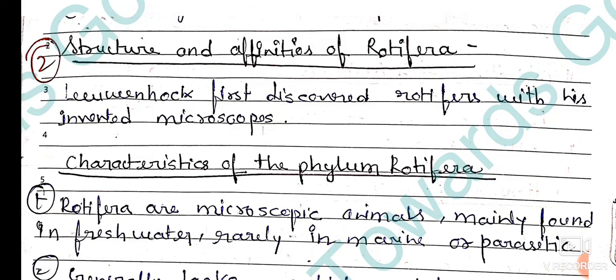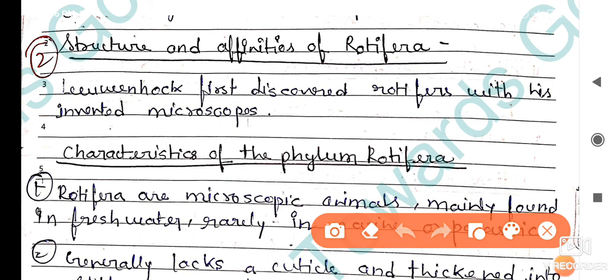Hi everyone, welcome back to my YouTube channel. Today's topic is the structure and affinities of Rotifera. We already discussed the first part about Ctenophora phylum and its affinities and structure. Today we will discuss about the Rotifera phylum. Leeuwenhoek first discovered Rotifera with his invented microscope.